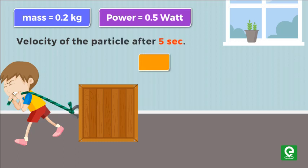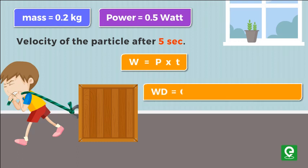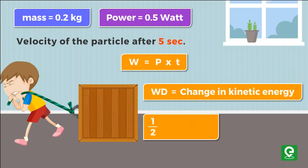We know that work done is equal to power times time. Also, from the work-energy theorem, we can write that change in kinetic energy is equal to work done. Therefore, half times mass times velocity squared equals power times time.